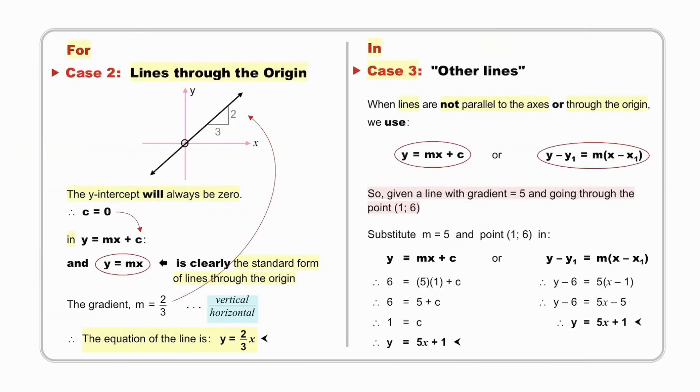For case 2, lines through the origin, the y-intercept will always be 0. Therefore, c is equal to 0. In y equals mx plus c, that gives us the standard form of lines through the origin as y equals mx. To find the gradient of this line, we go up to find the vertical over the horizontal, giving us a gradient of 2 thirds, and therefore simply the equation of the line is y equals 2 thirds x.